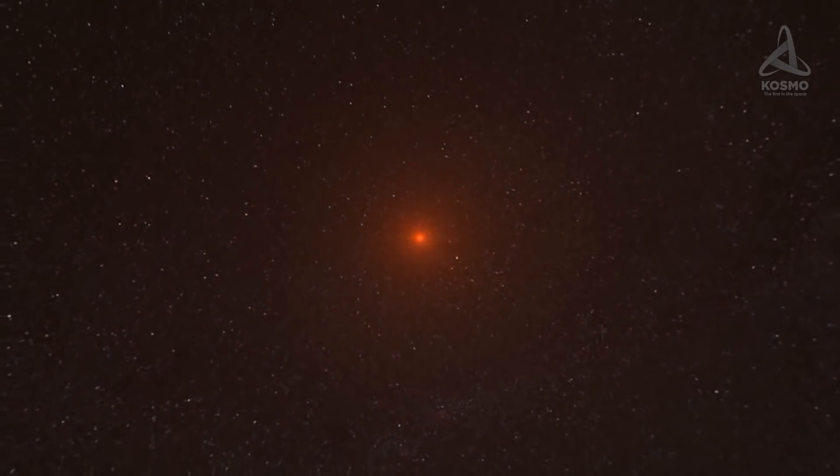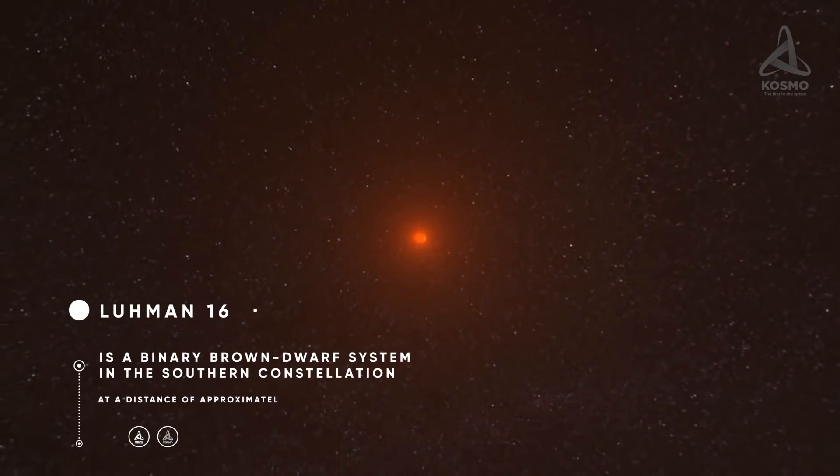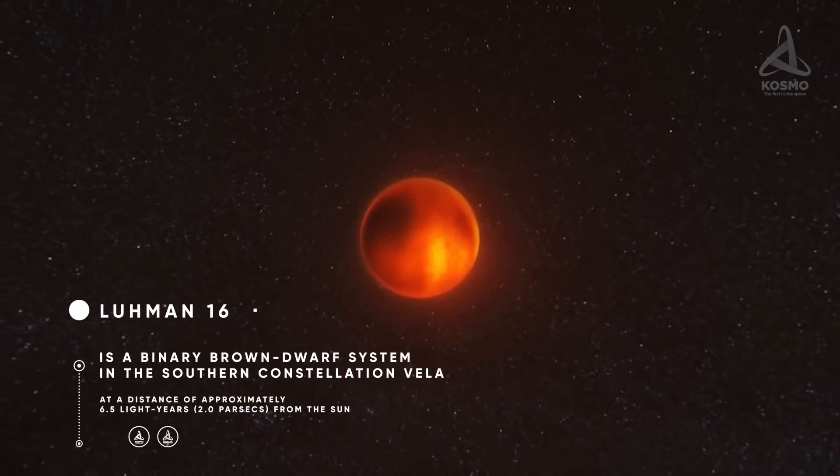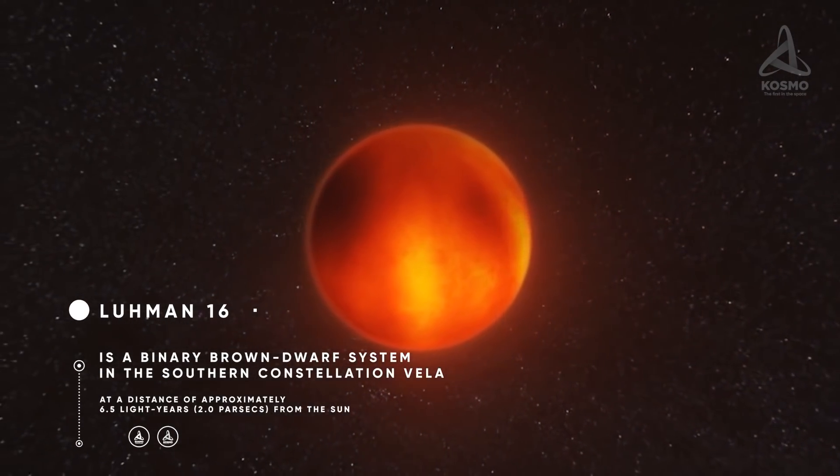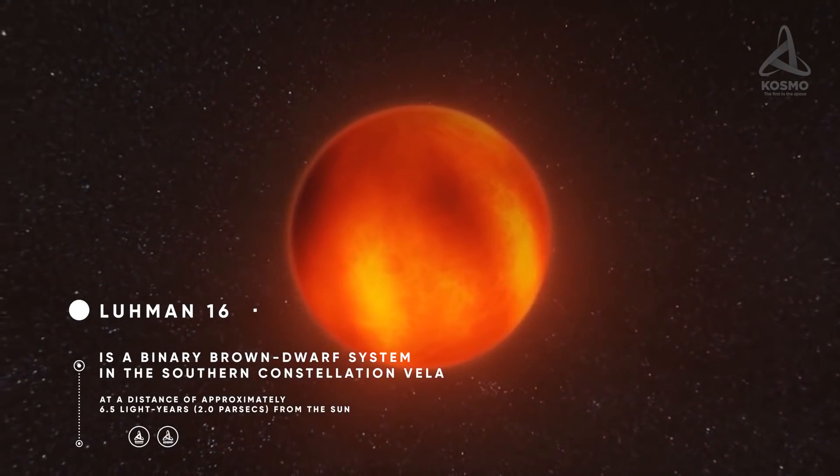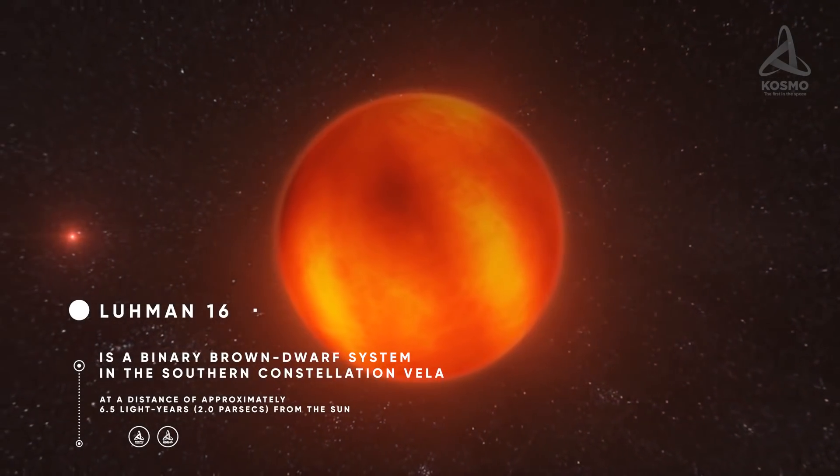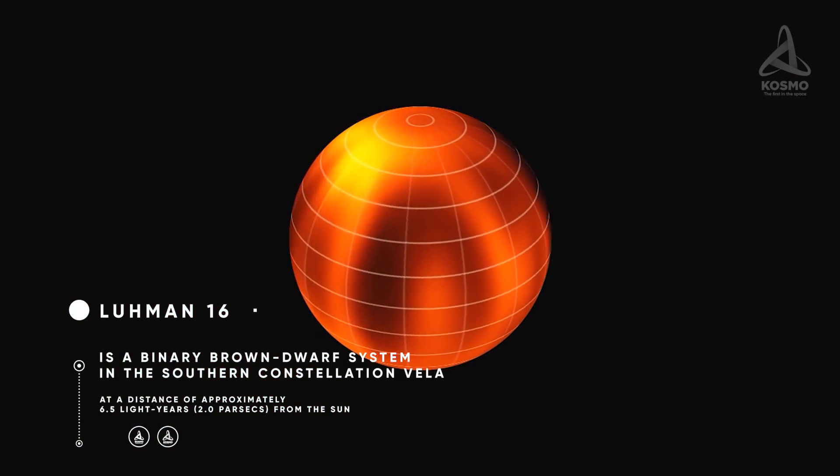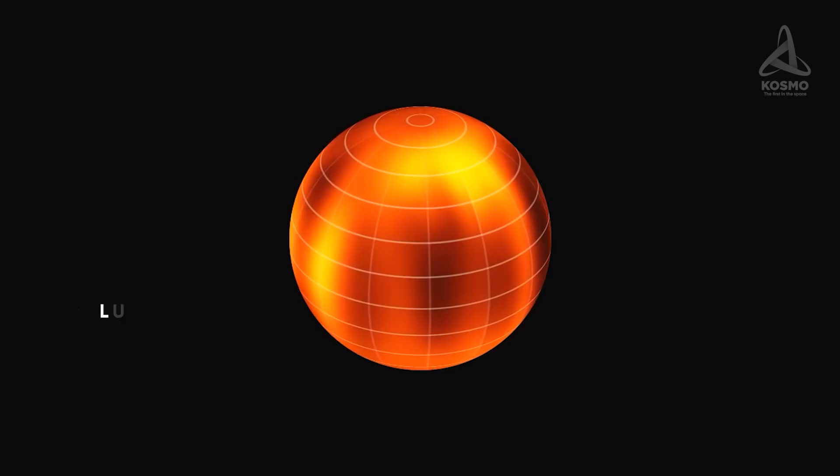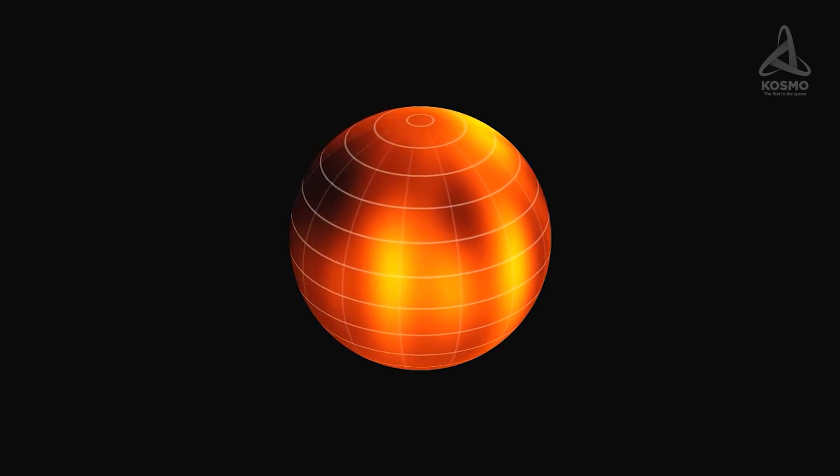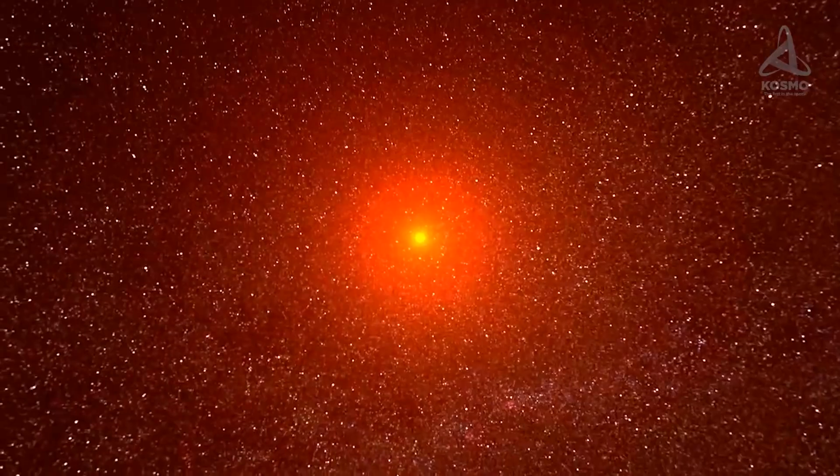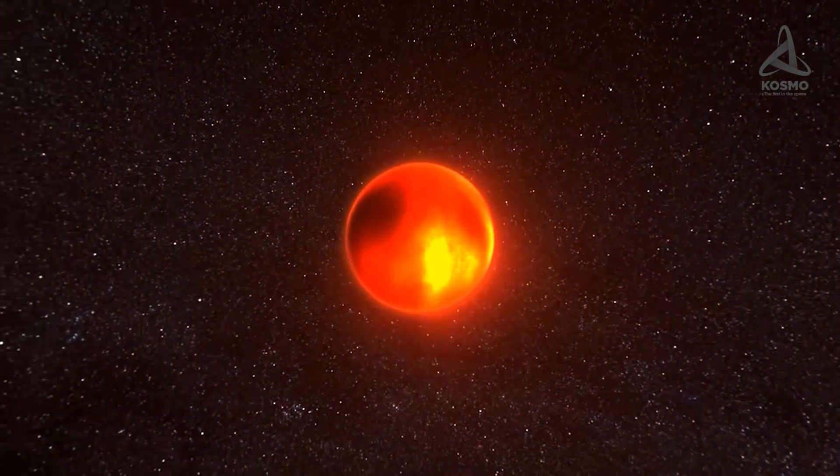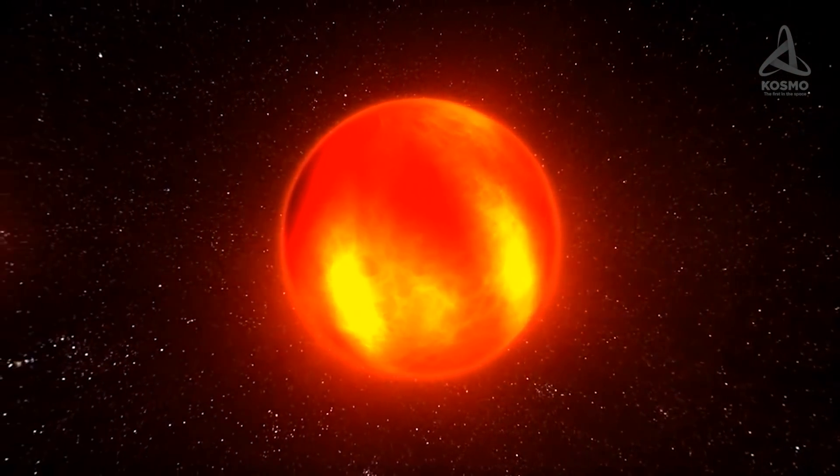For example, the mass of the Lumen 16 system is 30 Jupiter masses, with its brightness flaring up and fading from time to time. It is almost seven light-years away from us. At the same time, the mass of another component of Lumen 16 equals 50 Jupiter masses. This binary stellar system was discovered comparatively recently, in 2013, while no celestial bodies or exoplanets have been discovered in its vicinity.